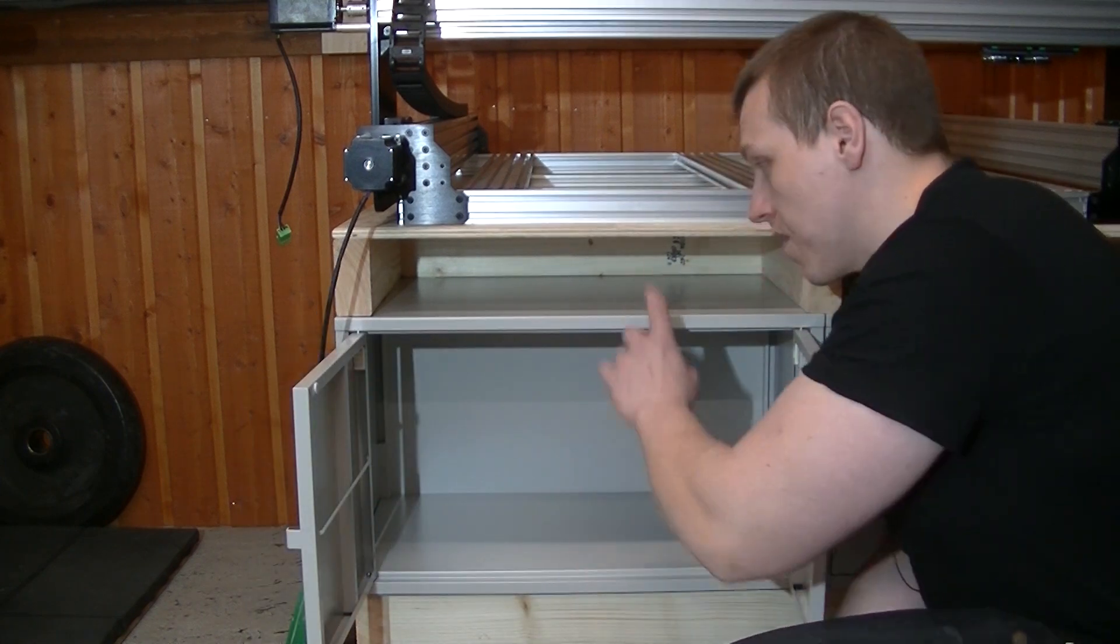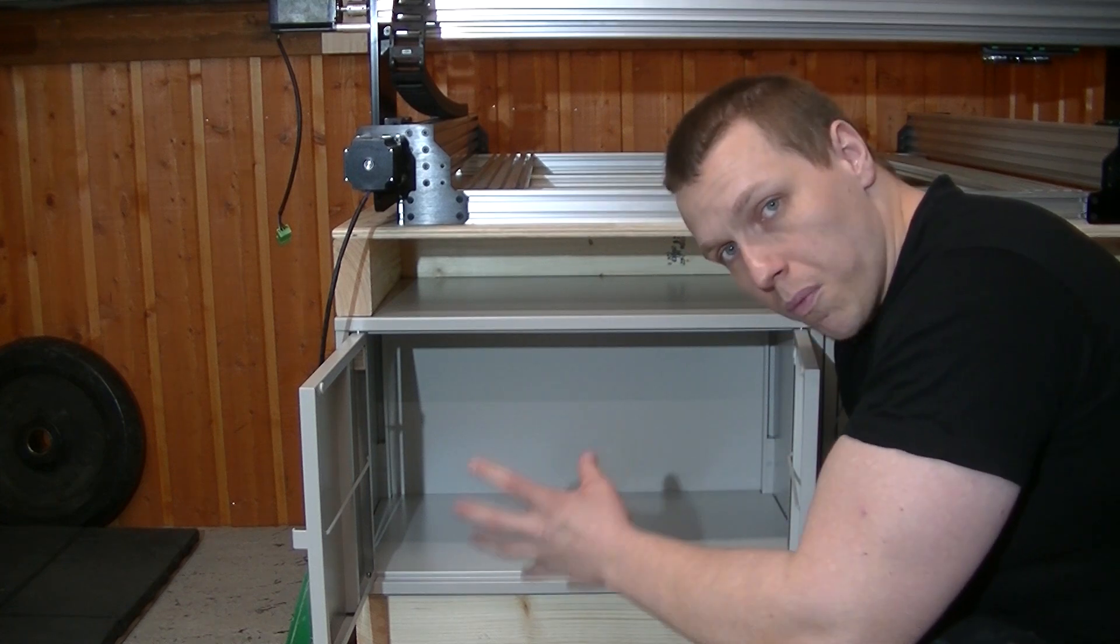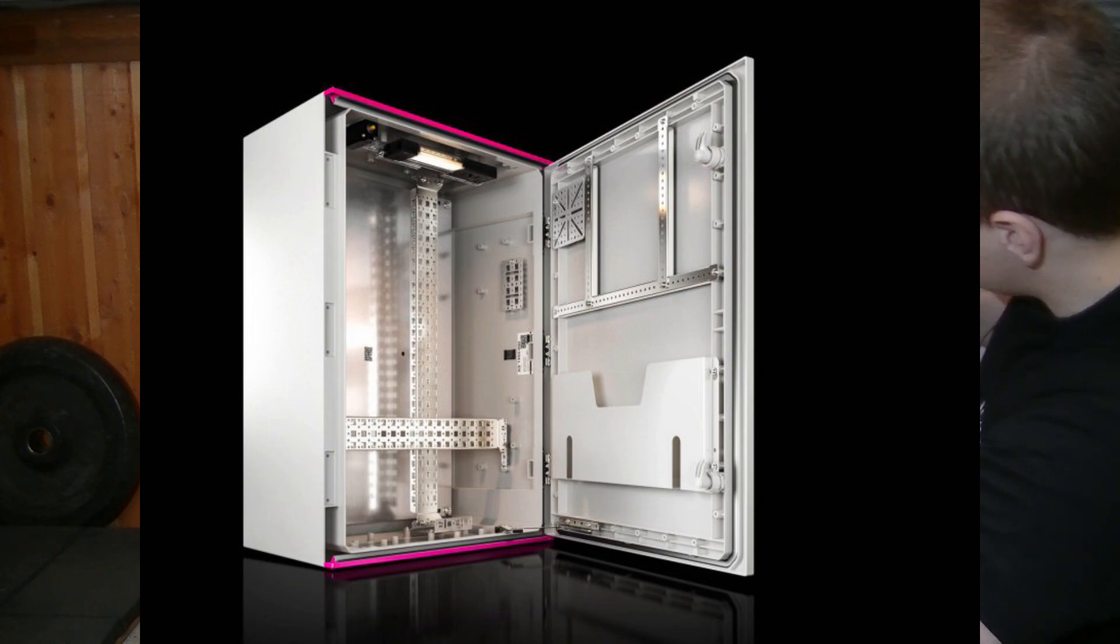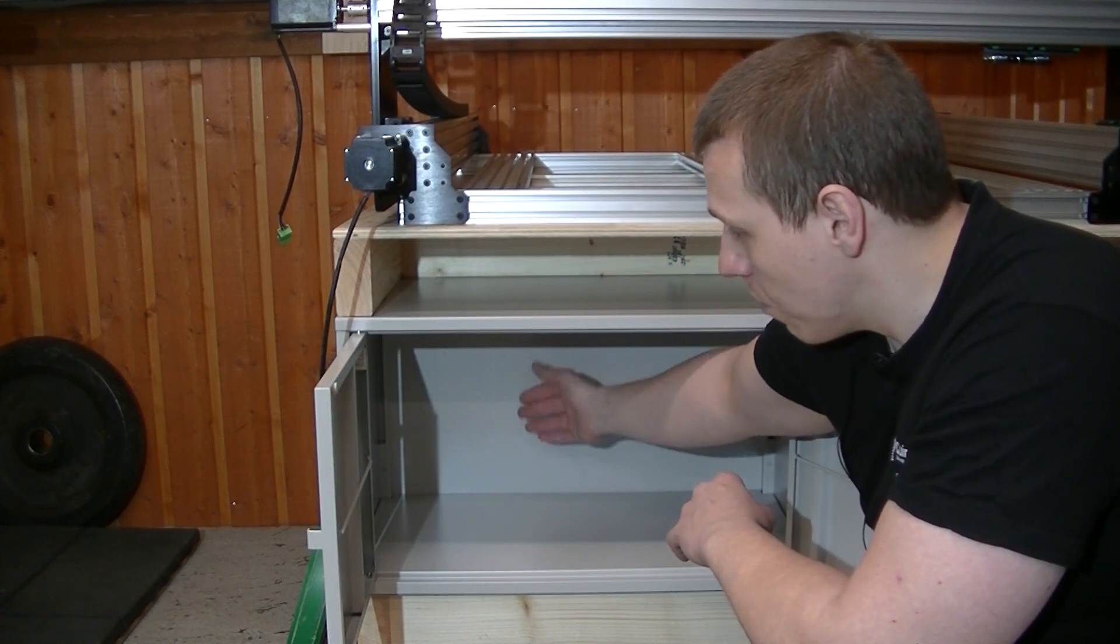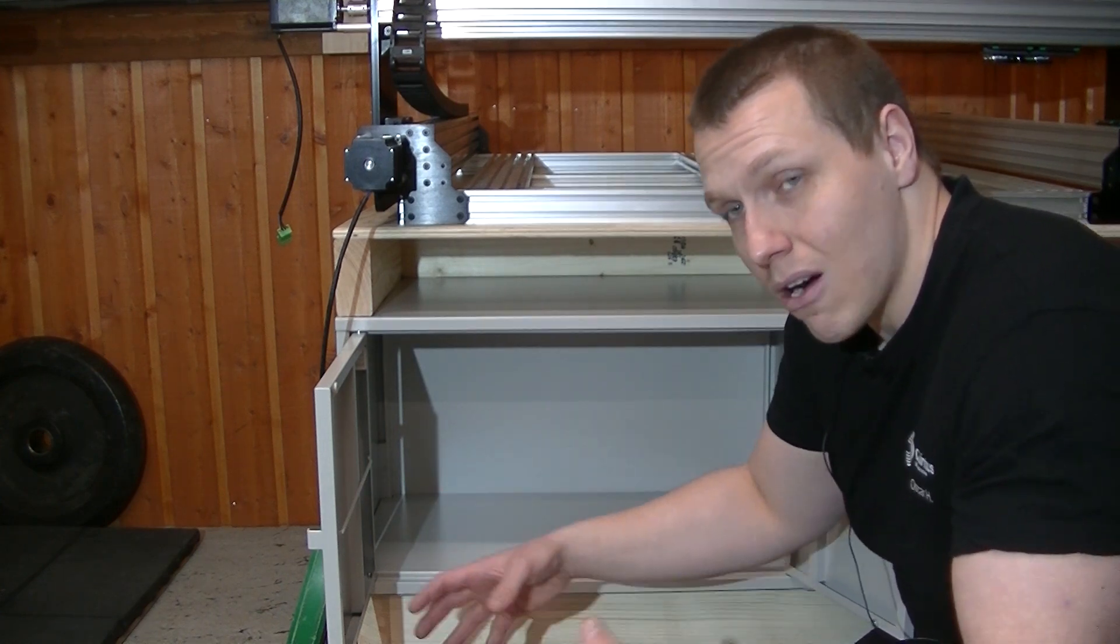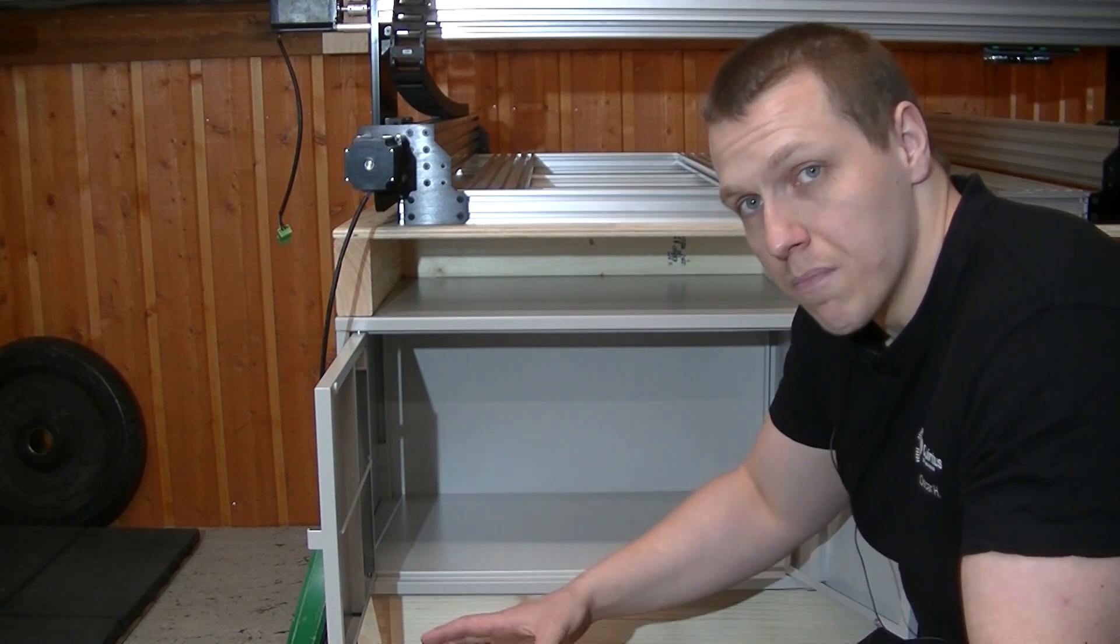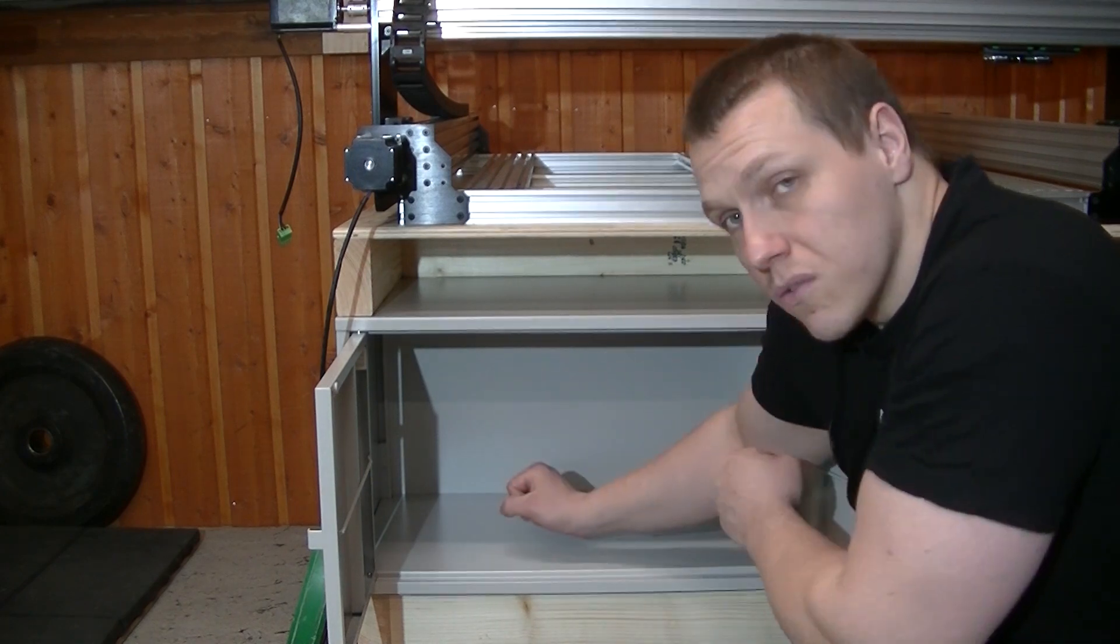Since this cabinet is already made from sheet metal, we're halfway there. One thing it's missing that proper electrical cabinets have is a double back. You have an extra piece of sheet metal that you can fit all your components on that's removable. You can assemble everything on a bench outside of the cabinet, you have proper access to all the wire terminals, all the components, and then you simply lift up the entire thing and install it inside the cabinet.